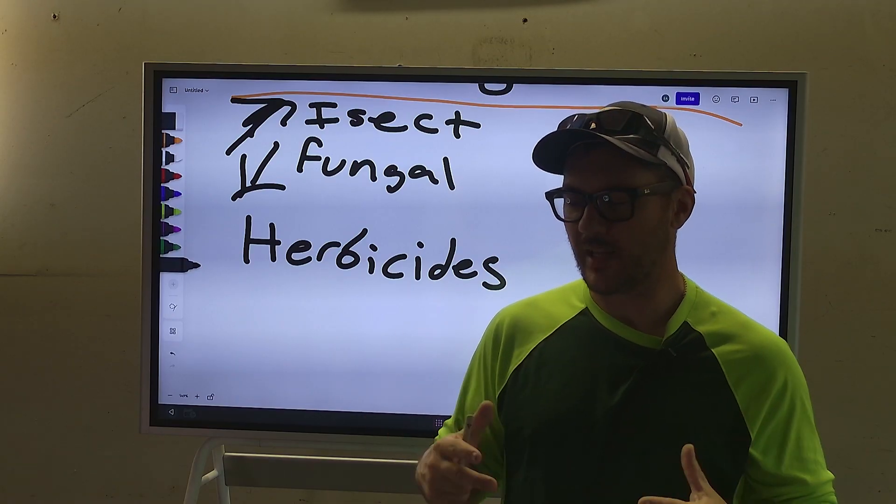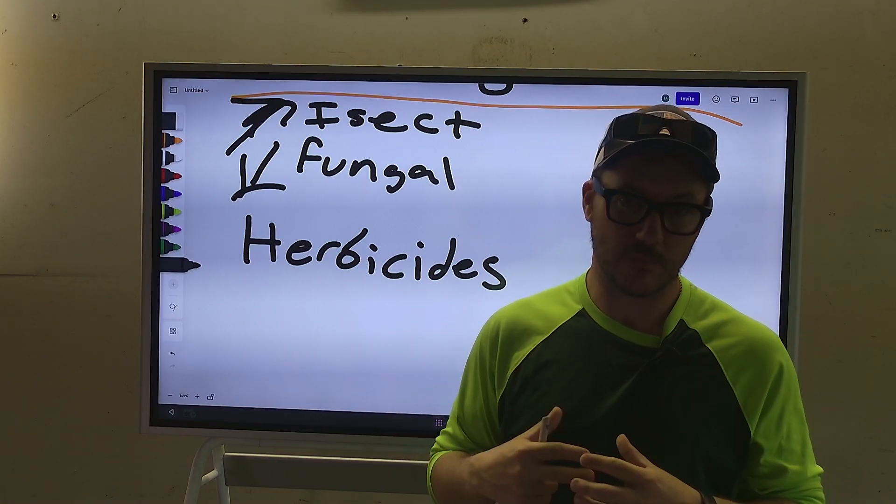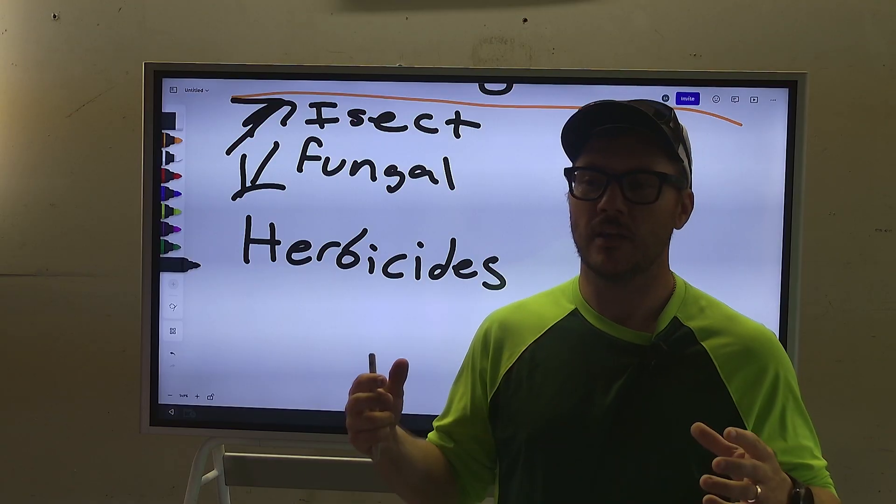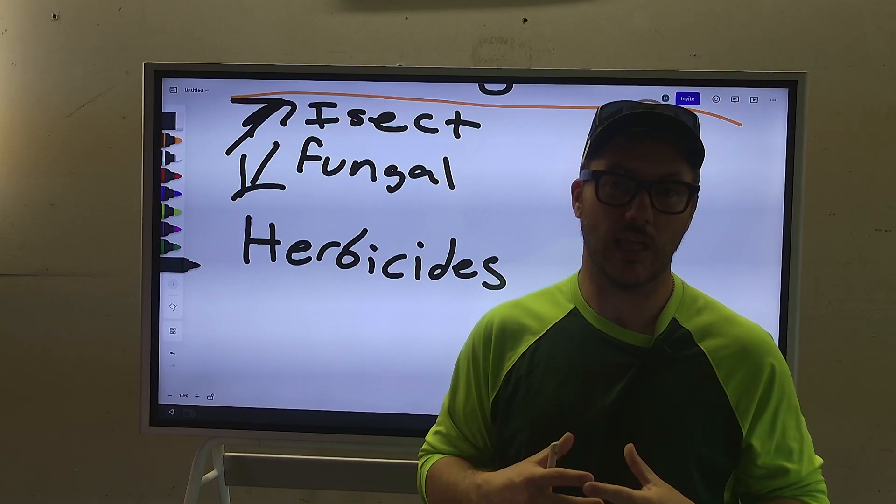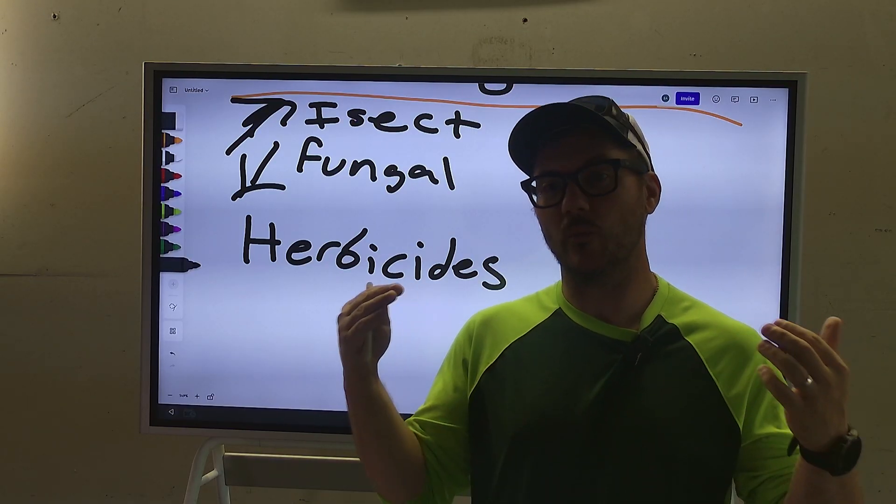And that's to basically keep itself alive, right? It doesn't want to reach that permanent wilting point. If you don't know what that is, that's basically the point where the plant completely dies because there's zero water. Permanent wilting point is plant death.